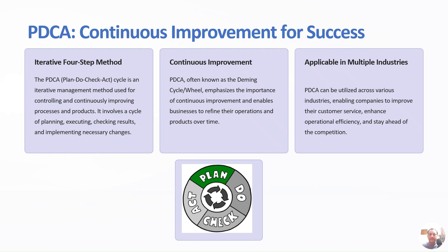PDCA, also known as Plan-Do-Check-Act, is a four-step model for carrying out change in a process. It is an iterative process — we keep repeating it until the intended result is achieved. It is used for continuous learning and improvement of a process or product. In the Plan step, you recognize an opportunity and plan a change.